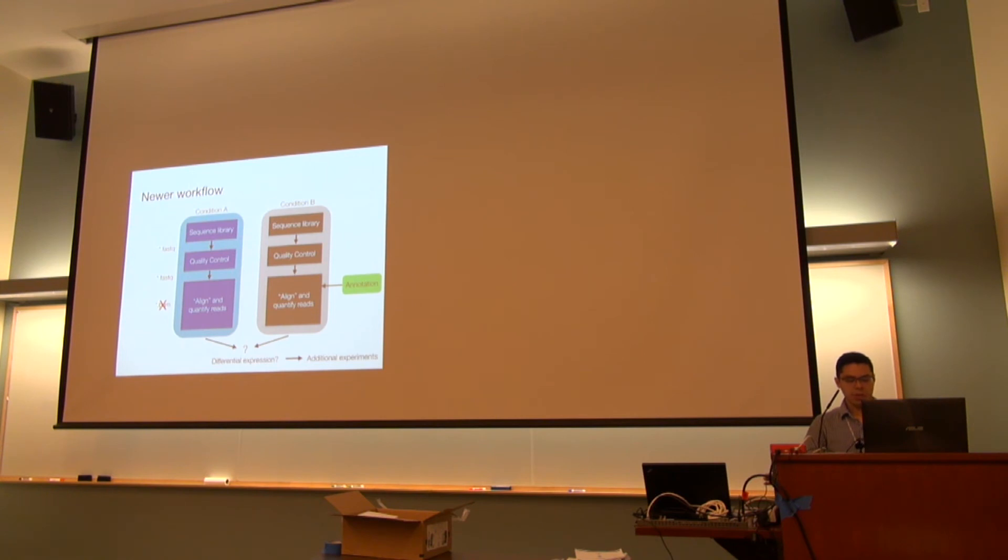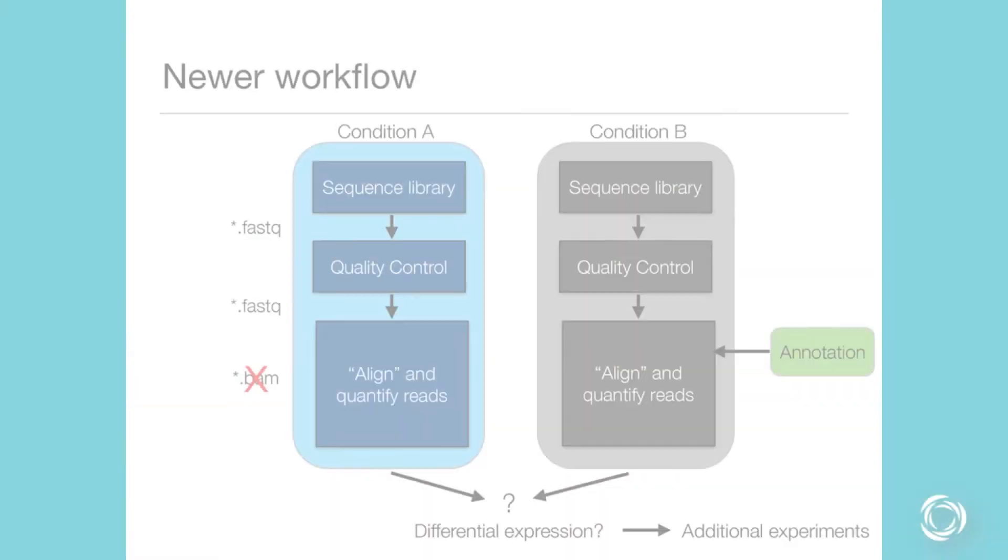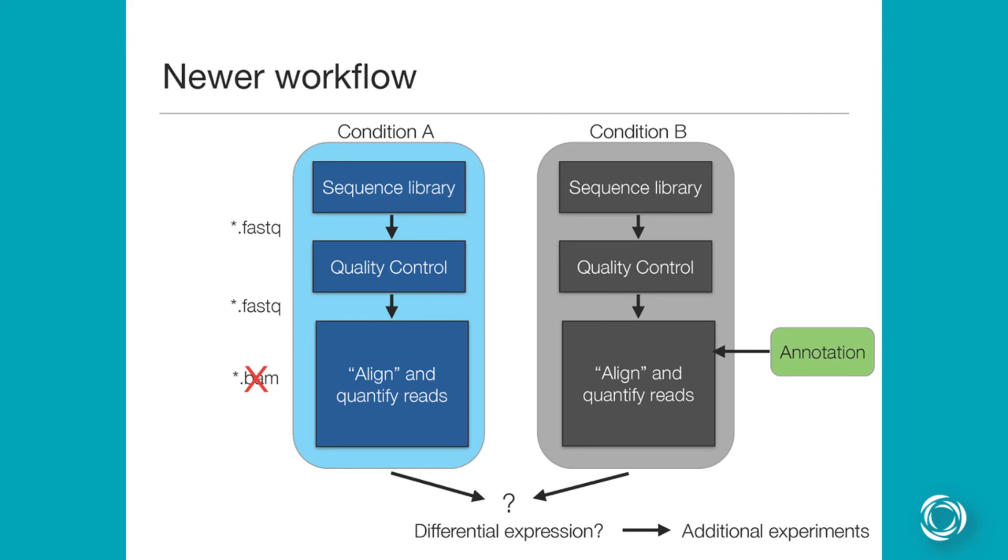Okay, so this is a newer workflow that a lot of the new tools are trying to employ. This is what Callisto and Sleuth do. We basically couple the alignment and the quantification. So I'll talk about what this means. And this makes your life a little simpler in the sense that there's less things that you have to keep track of as well as it's significantly faster than a lot of the previous workflows.